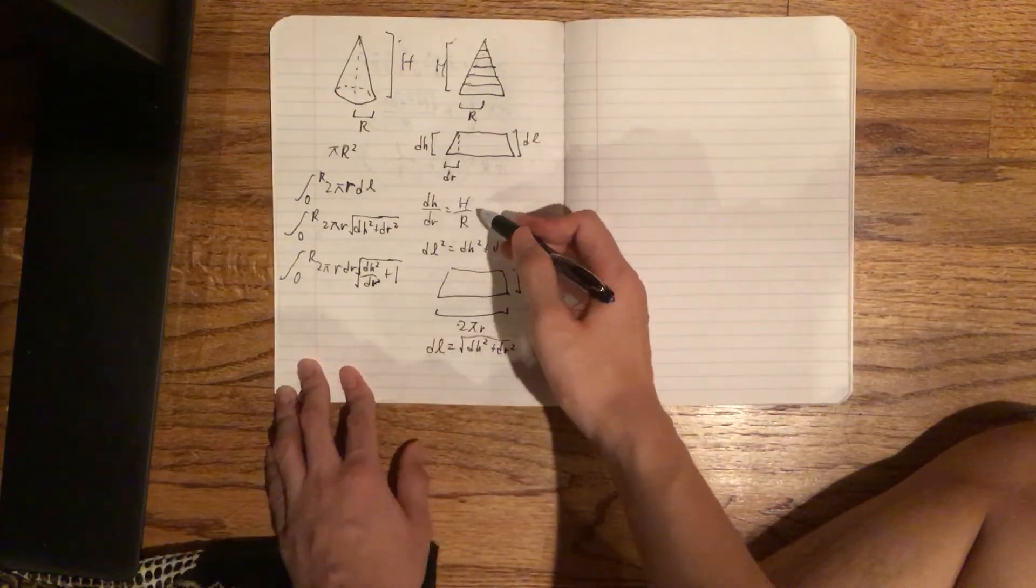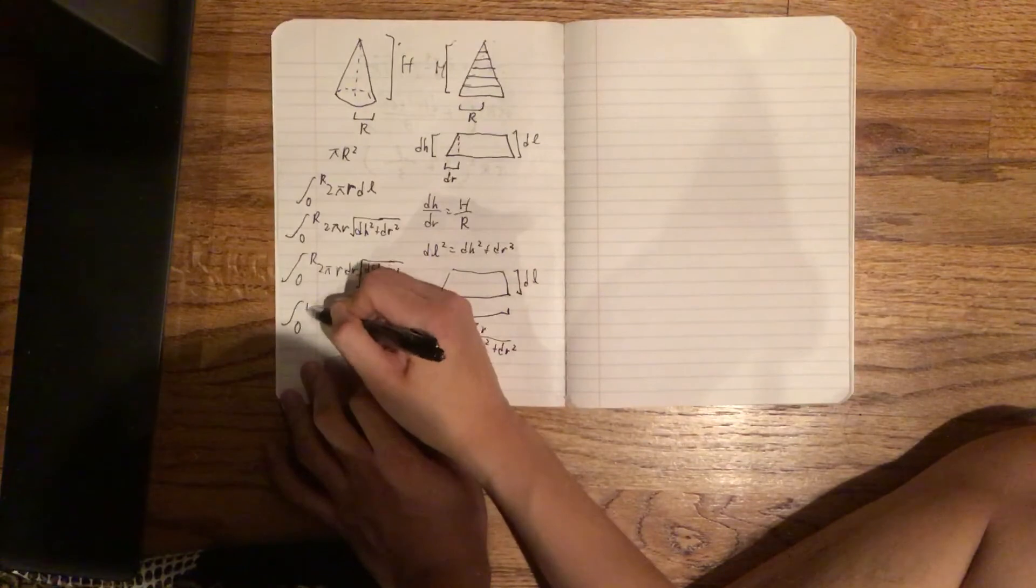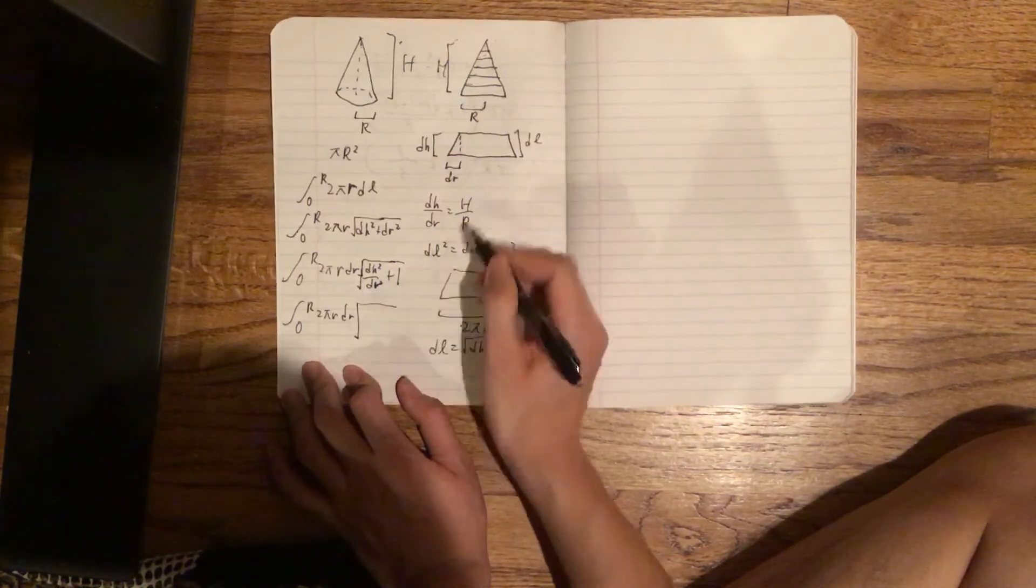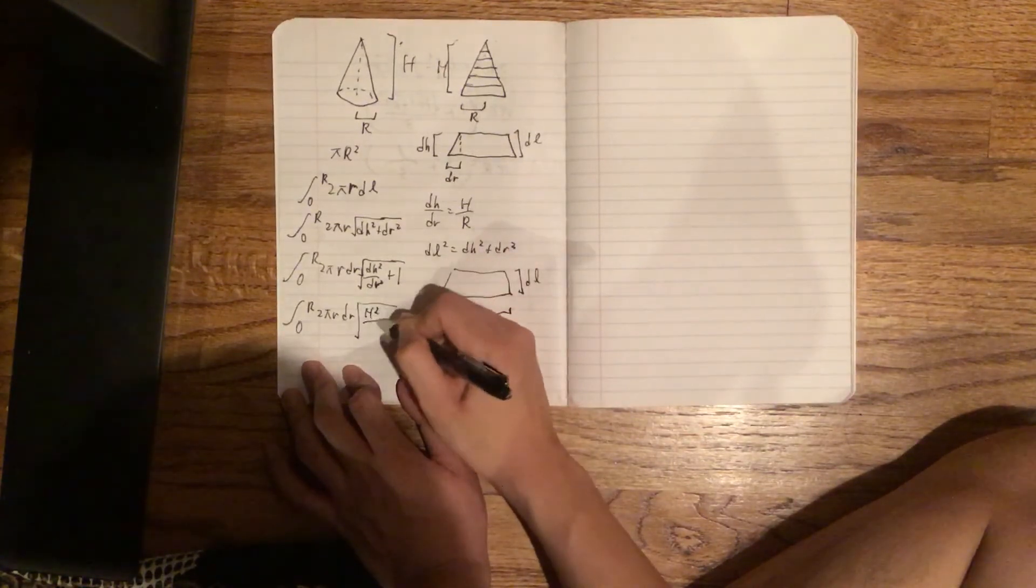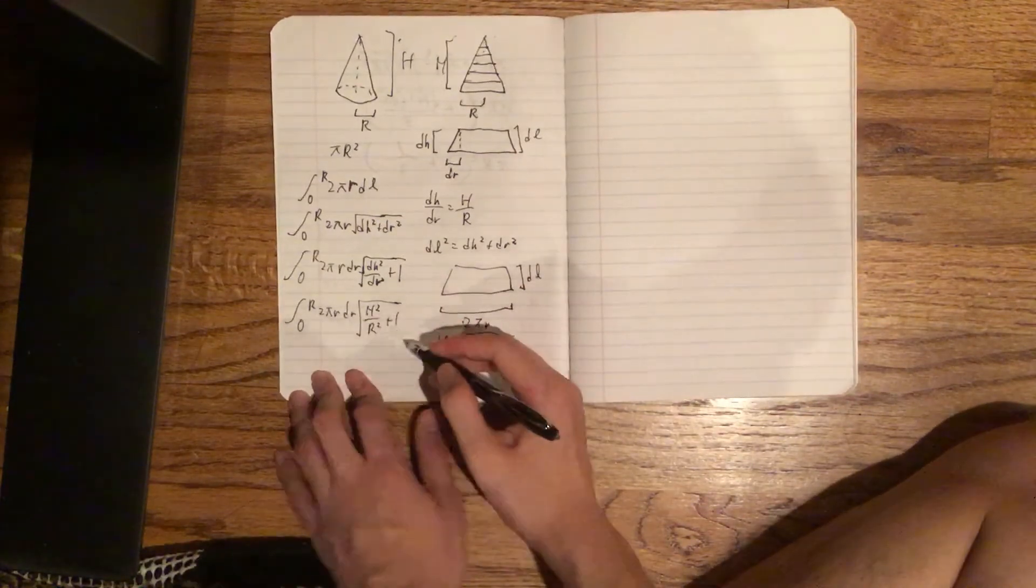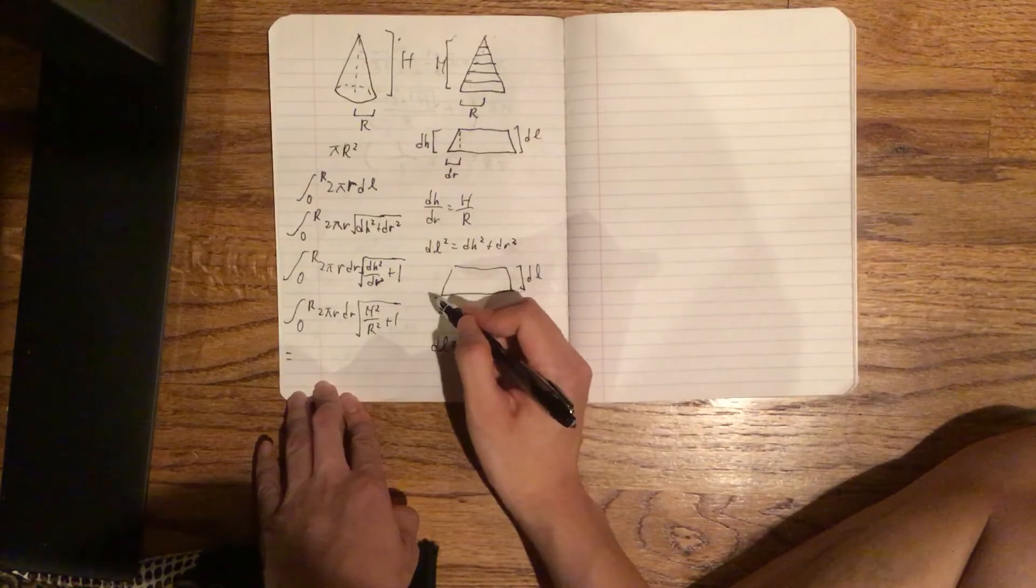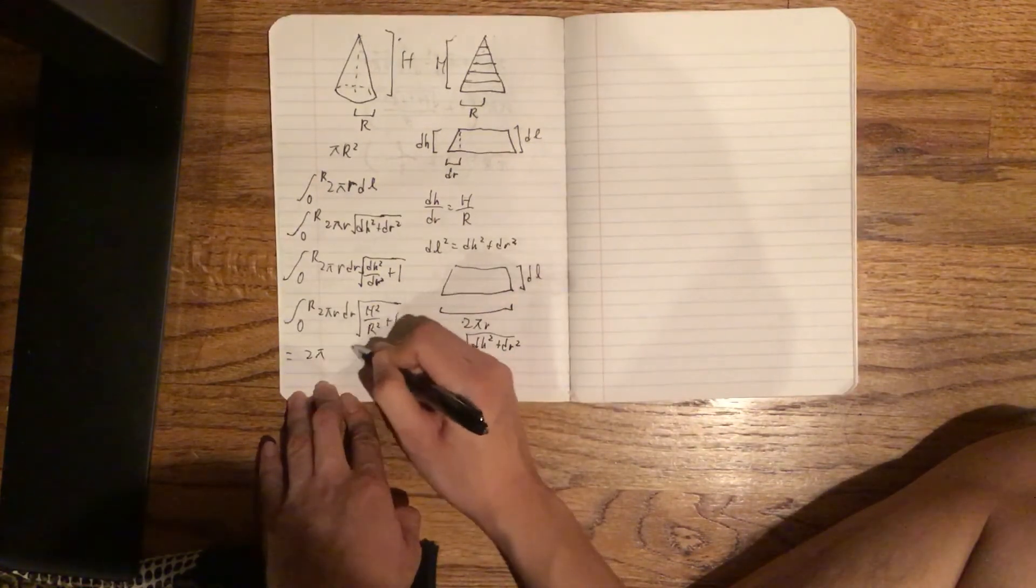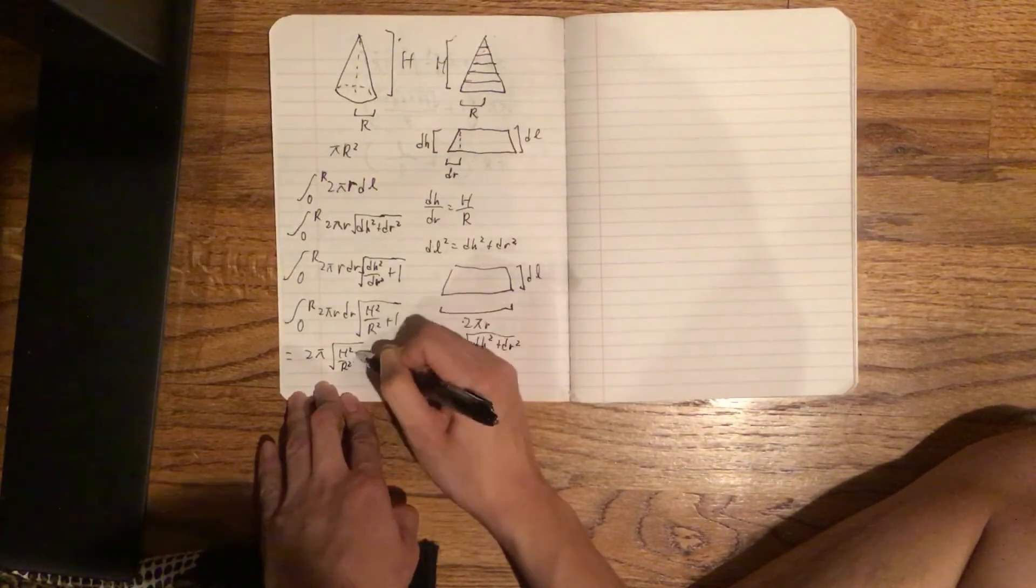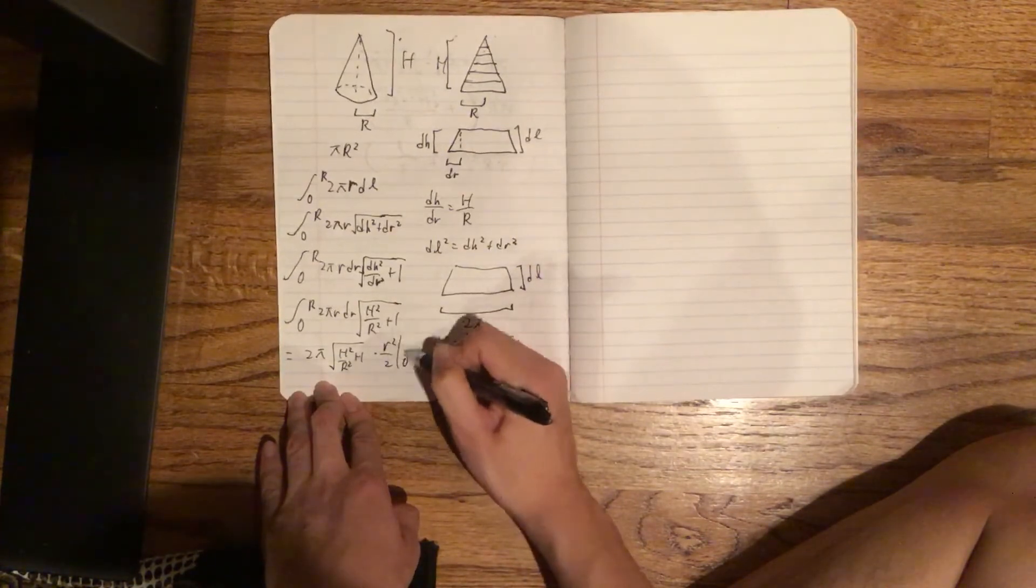Remember this? We can just plug dh/dr = h/r in here. And now we can actually integrate because everything else is a constant except for 2πr dr. So we have √(h²/r² + 1). So let's integrate this, and this is a pretty easy integral, which equals 2π√(h²/r²) times r²/2, evaluated from 0 to r.